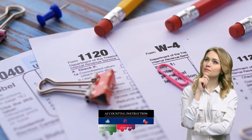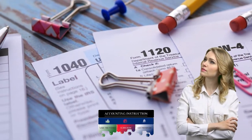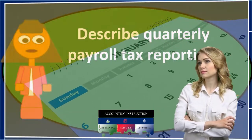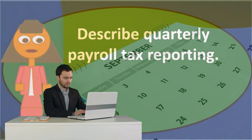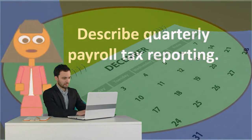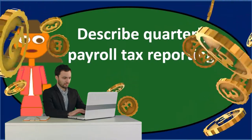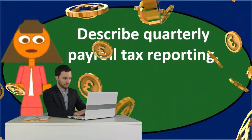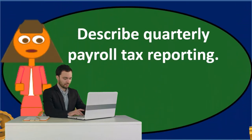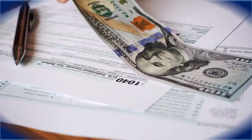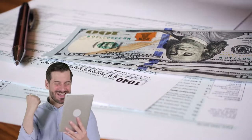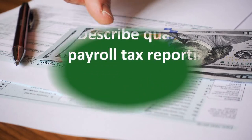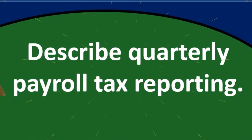The 941s must be reported each quarter. If we take 12 months and divide by four, we get three months — so this report must happen every three months: January, February, March; April, May, June; July, August, September; October, November, December. Those four quarters are indicated in the upper right of the actual 941 form, and we must check off the correct quarter or we'll confuse the IRS.